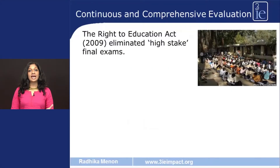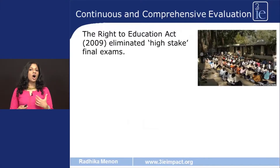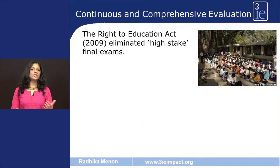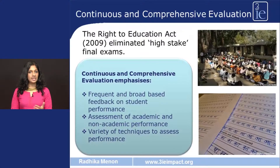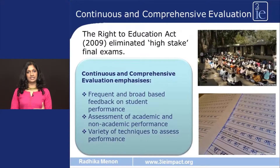The Continuous and Comprehensive Evaluation system sprung up as a result of the Right to Education Act. In 2009, final exams were eliminated and in their place this system was introduced. The rationale is that teachers need frequent feedback on children's learning ability to customize teaching, and children need not be put through undue stress from a final exam. The system emphasizes frequent and broad-based feedback on student performance, assessed on academic as well as non-academic performance including music, arts, and athletics, using unit tests, projects, and evaluation of child participation in the classroom.